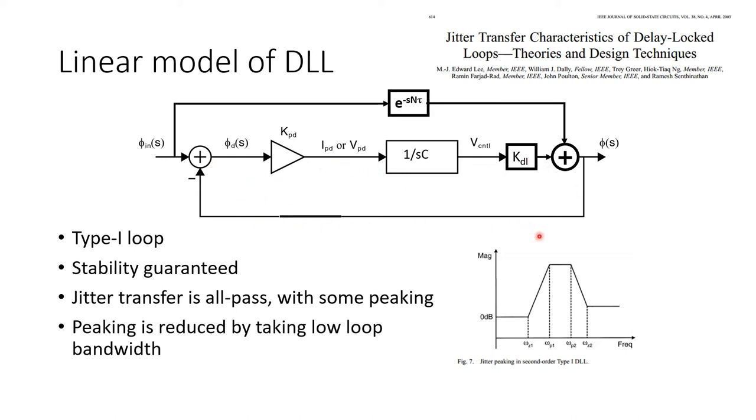And so, again, the rigorous analysis is presented in the reference in the top right. But the net of it is that at some frequencies, you can see amplification of phase noise from the input to the output of the DLL. Now, the amount of peaking that's exhibited can be reduced by reducing the loop bandwidth of this DLL.